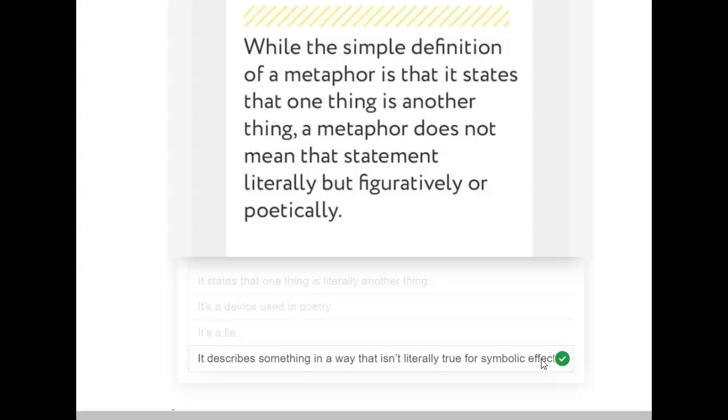While the simple definition of a metaphor is that it states one thing is another, a metaphor does not mean that statement literally, but it means it figuratively or poetically. So this first one is not correct because it states it tells us that one thing is literally another thing, and that's not what it's doing. Instead, what it's doing is it's describing it in a way that's not literal or true for symbolic effects. It is symbolically showing us that one thing is another. It is used in poetry and sometimes it could be a lie. However, this is the best definition.